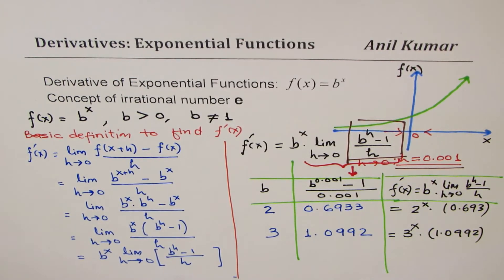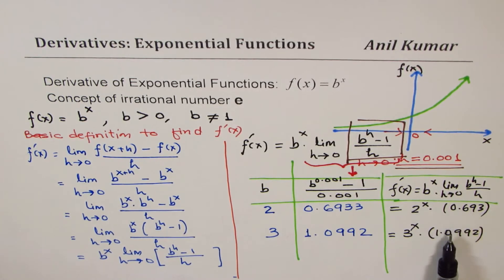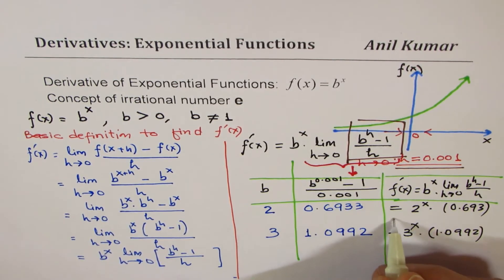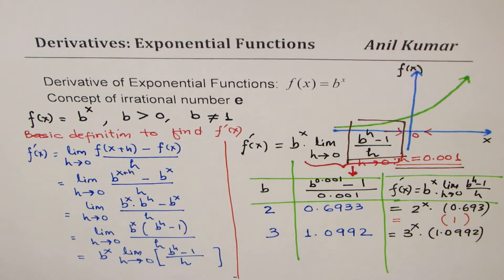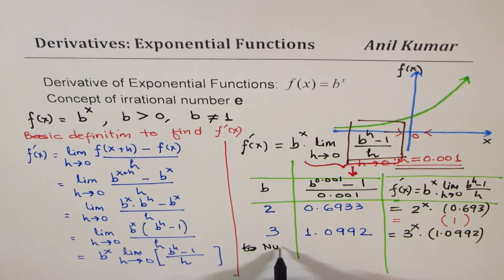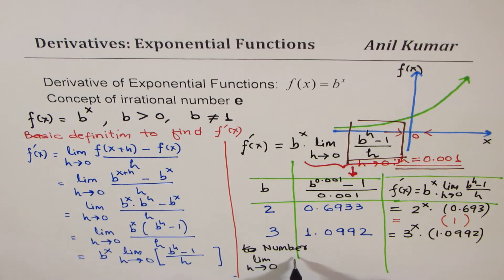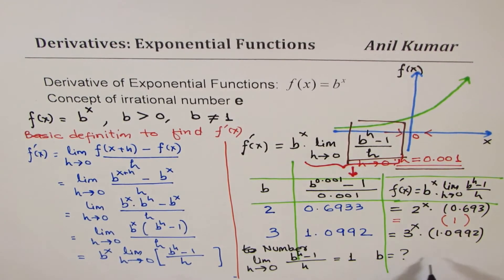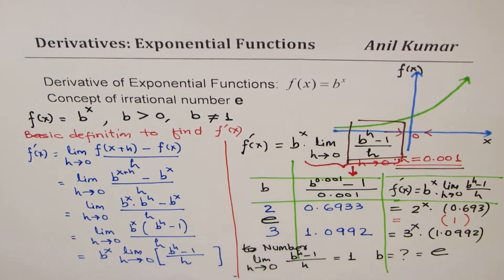What we observe is that we are multiplying the original function by a factor that is either less than 1 or greater than 1 when b is 2 or 3. This suggests there should be something in between — a number for which the limit h approaches 0 of that number to the power of h minus 1 over h equals exactly 1. We are looking for that value of b, and this value of b is indeed e.